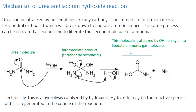The immediate intermediate is a tetrahedral orthoacid which will break down to liberate ammonia once. The same process can be repeated a second time to liberate the second ammonia molecule.